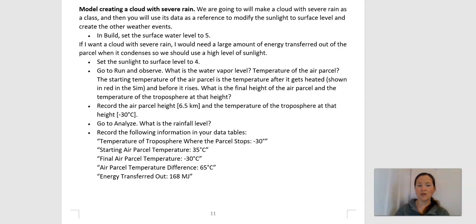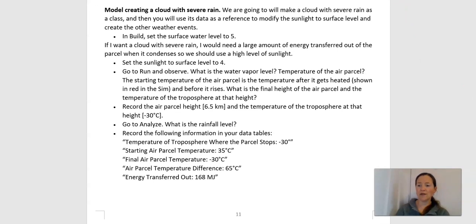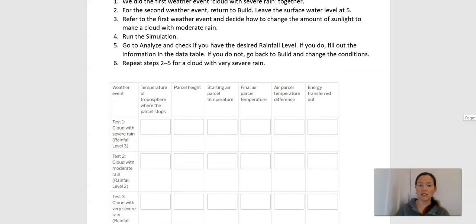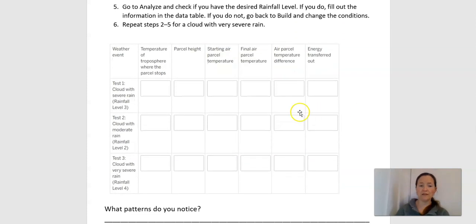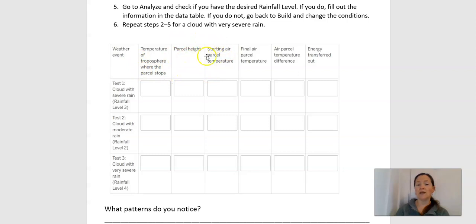We're back to our packet. This packet conveniently has the data from that test, so we can plug it into our chart. Test one — this is what we just did — we got a rainfall level of three. We can plug in the temperature of where the parcel stopped, what was going on in the surrounding air where the parcel stopped, how high it rose, the starting temperature of the air parcel, the final temperature, the difference, and the energy transferred out. All of this data we can get from the Analyze column in the sim.